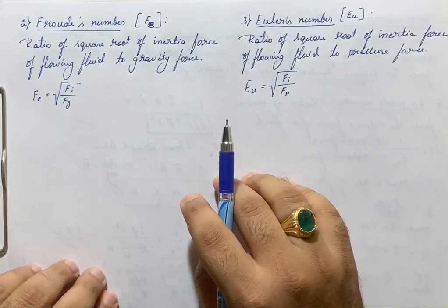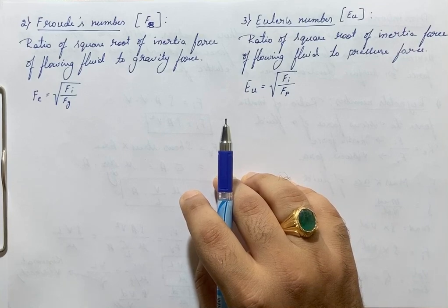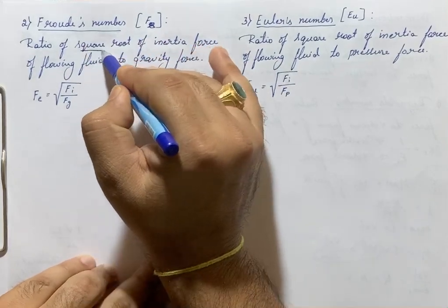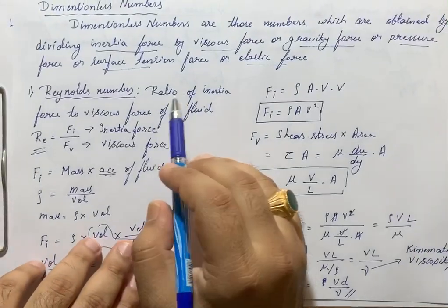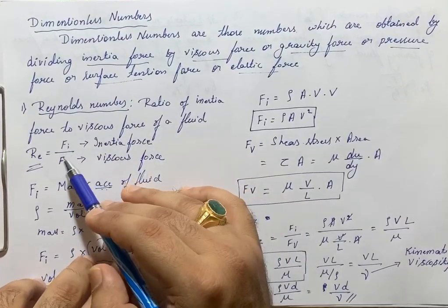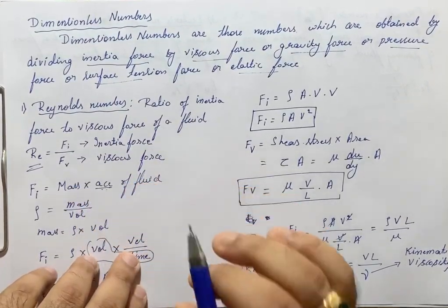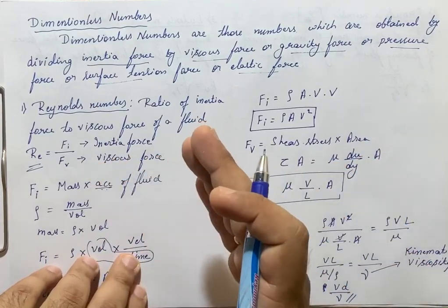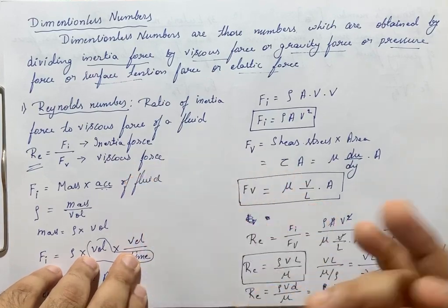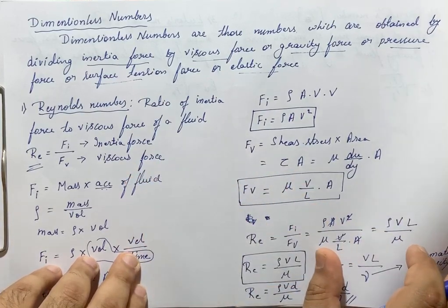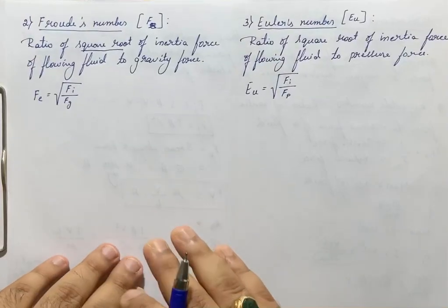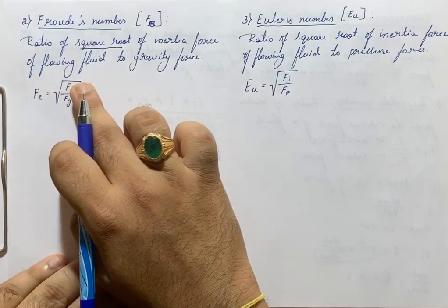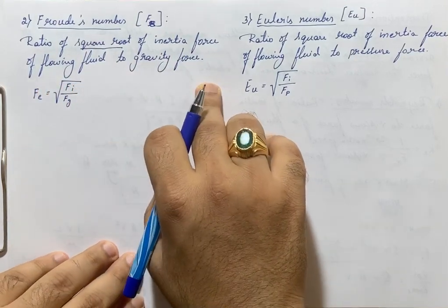Next is the Froude number. Froude number is defined as the ratio of the square root of inertia force of a flowing fluid to gravity force. Note that unlike Reynolds number, all other dimensionless numbers including Froude number involve a square root.